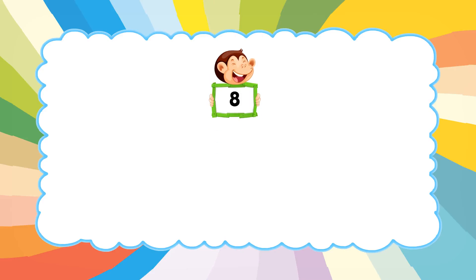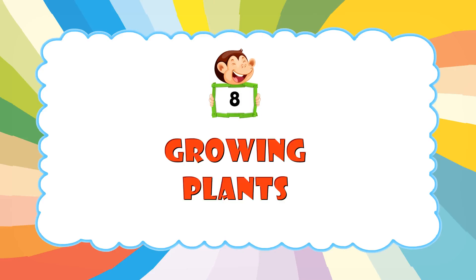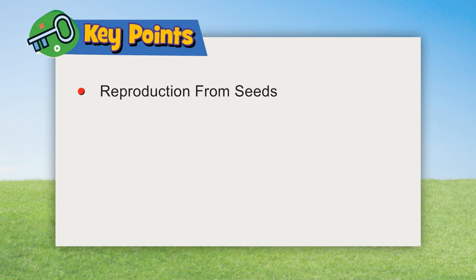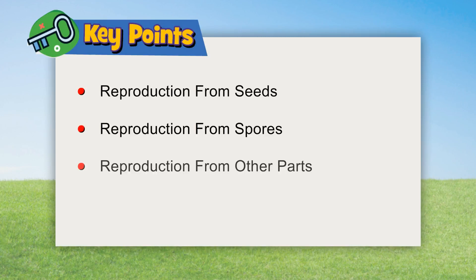Chapter 8: Growing Plants. Key points: Reproduction from seeds, reproduction from spores, reproduction from other parts, and plants from far away.